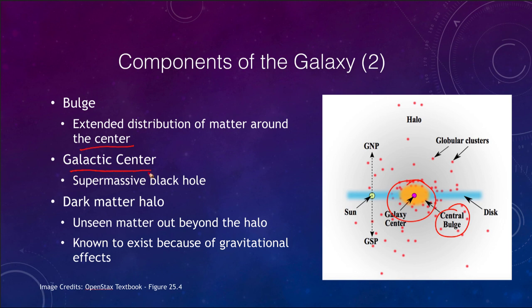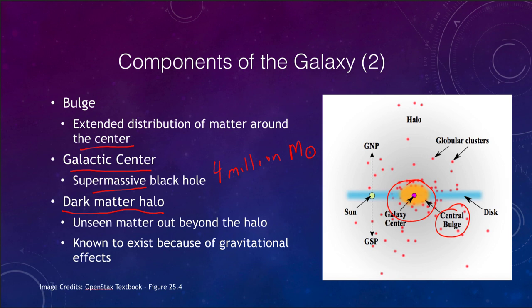The galactic center itself contains a supermassive black hole of about 4 million solar masses — 4 million times the mass of our sun. Out beyond that, not shown in the image, is a dark matter halo. We can see the halo itself, but there is also much more unseen or dark matter around it. We know that it exists because of gravitational effects, and there must be far more mass than we can possibly see. Dark matter is one of those things that astronomers are continuing to study today.